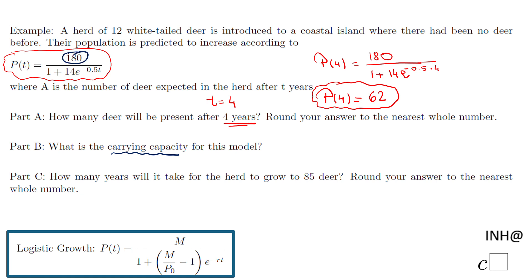And that will be M. That's the way we call it. M will be 180. Part C, we have to find how many years it will take for that group of deer to grow to 85.